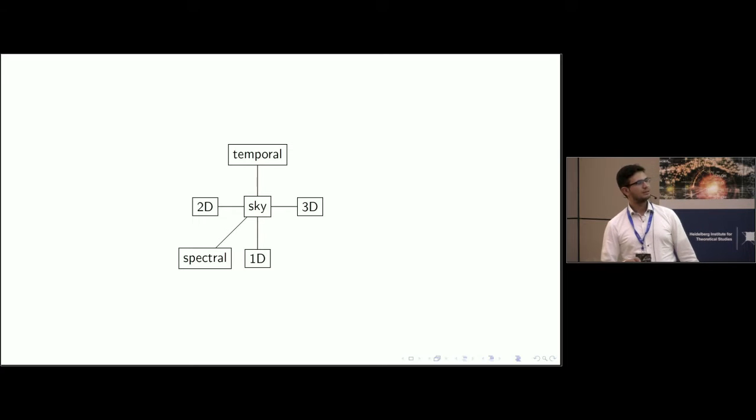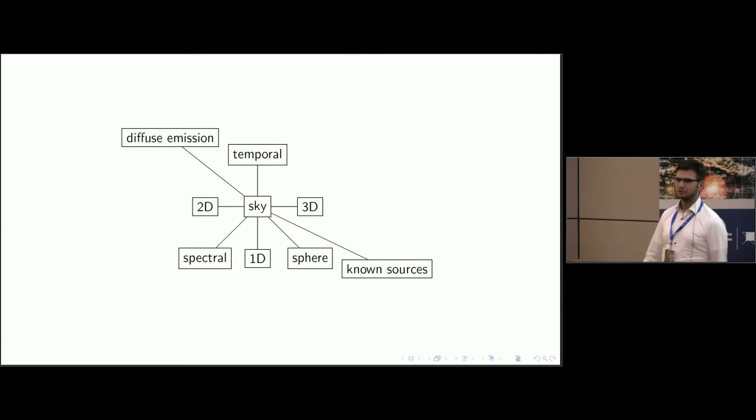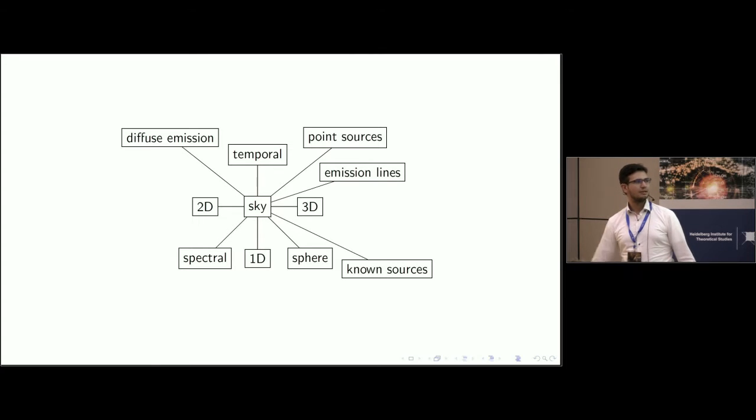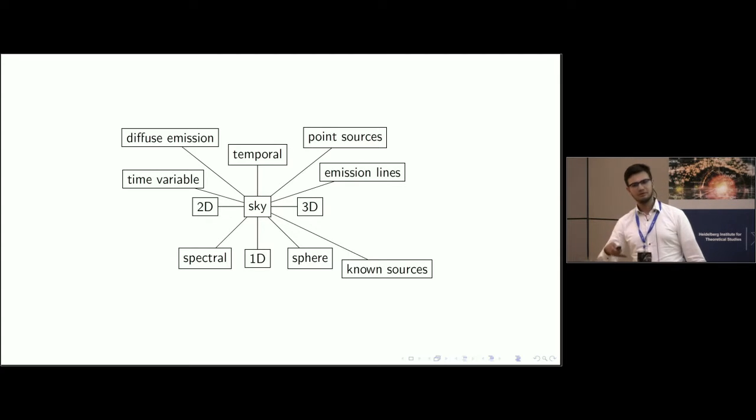And what we see there, for example, are known sources. A lot of parts of the sky we know what to expect, maybe with some uncertainty. What we can then put in there. Other components are maybe some diffuse emission, as we have seen before. So large extended structures. Of course, point sources are everywhere. And maybe emission lines if we have spectral dimensions. Time variable sources if we have temporal dimensions. And so on. And one can really think about what to expect. And one has to model this in terms of some prior distributions.